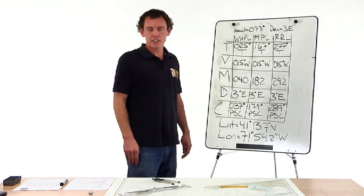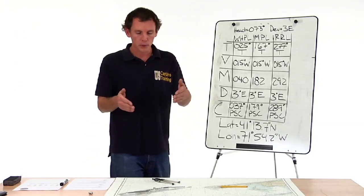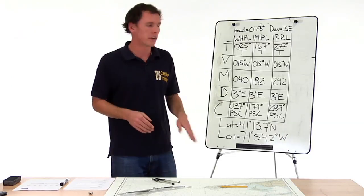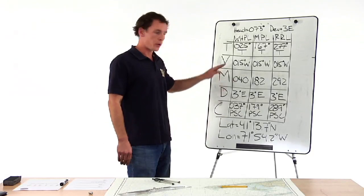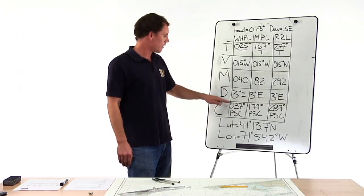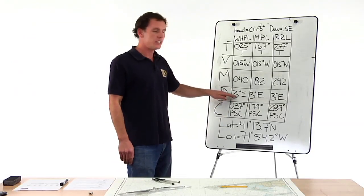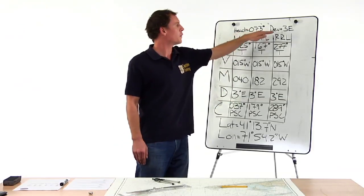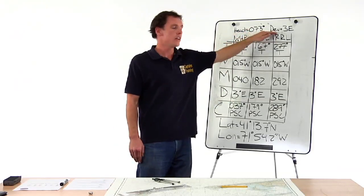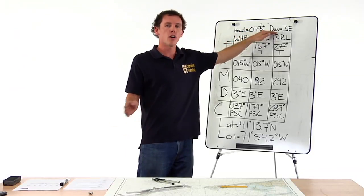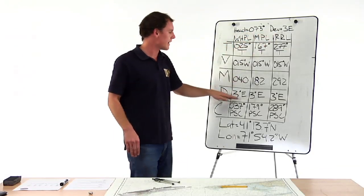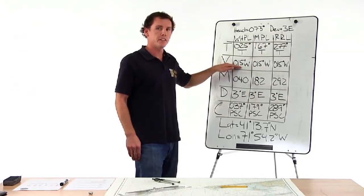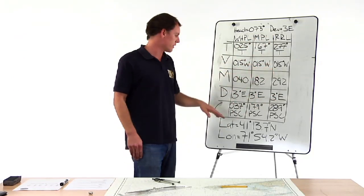All of our bearings are in degrees PSC. In order to put them on the chart we need to convert those PSC bearings to true bearings. So we start at compass and we work up 37 with three degrees deviation from our heading of 73, we get a deviation of three east. We are on that heading when we took all of the bearings, so we apply that deviation to all of them. Same with variation. It's 15 west. It'll be applied to all of them.